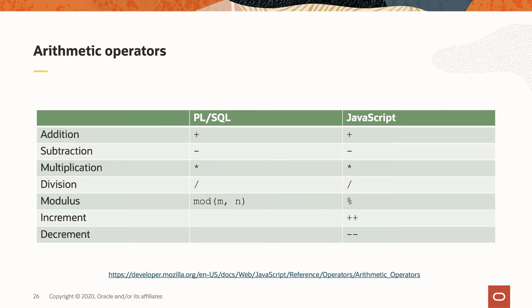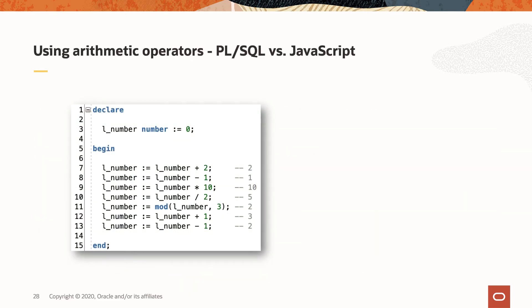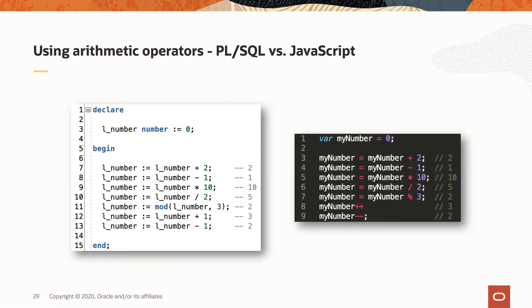When it comes to arithmetic operators, things are mostly the same until we get to modulus. In PL/SQL we use a function call, whereas in JavaScript we have an operator — the percent sign. JavaScript also has increment and decrement operators, which are missing in PL/SQL. One important heads up: the plus sign is also the concatenation operator in JavaScript. If either operand is a string, you get concatenation. It's only when both operands are numbers that you get addition.